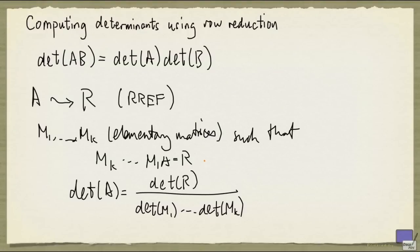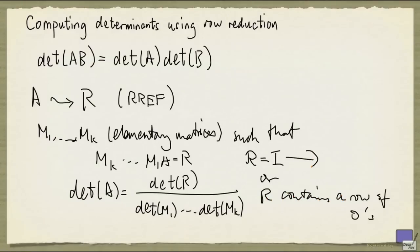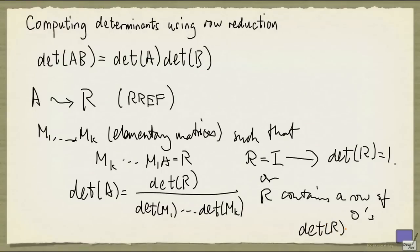Because R is square and in reduced row echelon form, there are only two possibilities. The first is that R equals the identity matrix, or R contains a row of zeros. In the first case, the determinant is simply 1. In the second case, from the definition of the determinant, the determinant of R is going to be 0, because you need to pick an element from each row, and if there is a row of zeros, then each term in the definition of the determinant will always be 0.